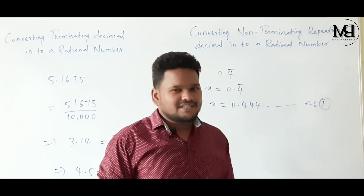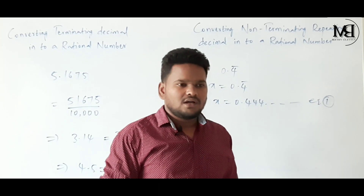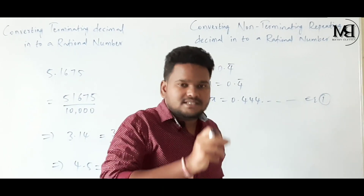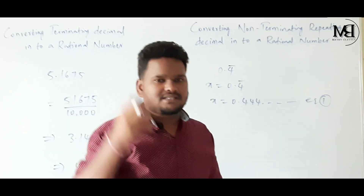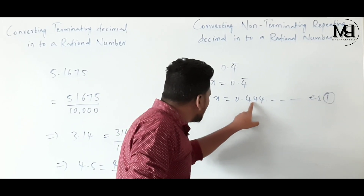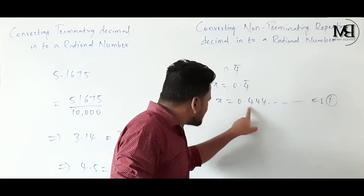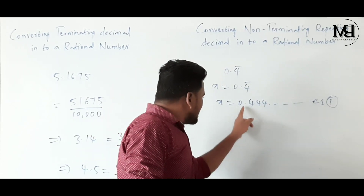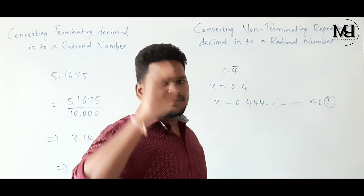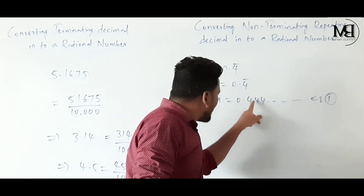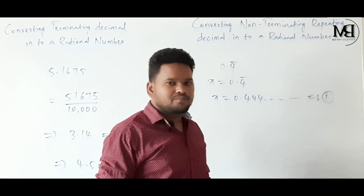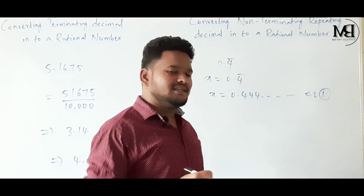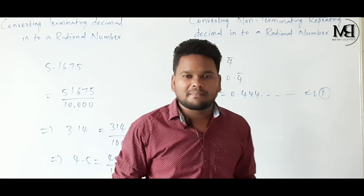For equation 2, we must keep the decimal point after the digit which is repeated, meaning we move the decimal point one step to the right. So we multiply both LHS and RHS by 10.